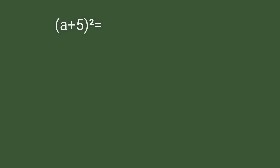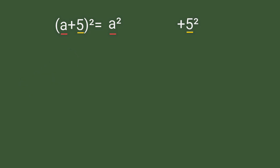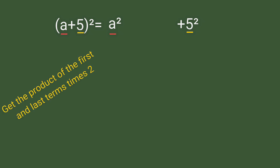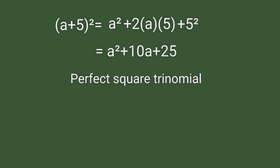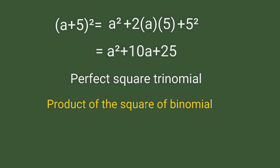For example, we have the square of (a + 5). To get the product, we square the first and last terms: we get a squared and 5 squared. To get the middle term, we take the product of the first and last terms times 2 — so we have 2 times a times 5 — and our final product is a squared plus 10a plus 25. This expression is a perfect square trinomial because it is the product of the square of a binomial.